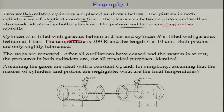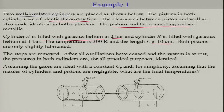Cylinder A is filled with a gaseous nitrogen at 2 bar, cylinder B is filled with gaseous helium at 1 bar. The temperature is 300 Kelvin and the length is 10 centimetres. Both pistons are only slightly lubricated. The stops are removed after all oscillations have ceased and the system is at rest, and the pressure in both cylinders are for practical purposes identical.